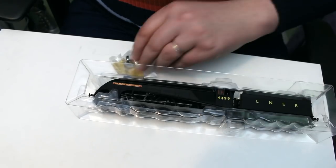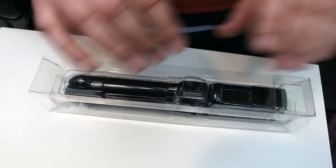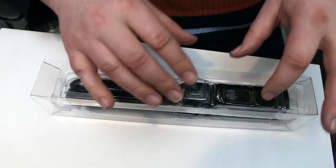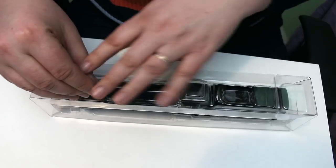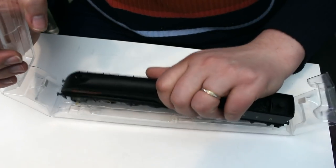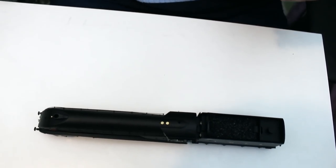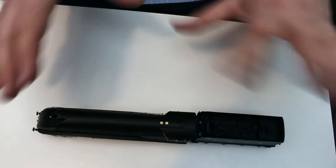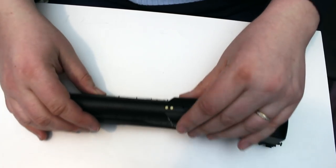The previous version looks pretty much the same but it doesn't have the decoder socket in the tender and that's what we really want. It means that this is really easy to fit with TTS sound. Hornby do do a TTS A4 sound chip and fitting this is just so amazingly easy. I'm going to show you that towards the end of the video.